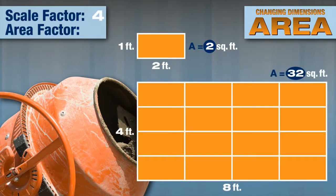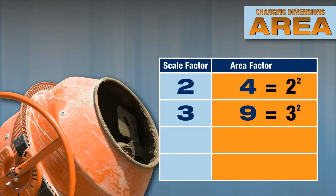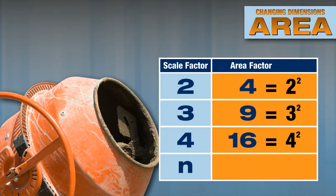If you quadruple both linear dimensions, the area is 16 times the original. Let's put this information into a table and look for a pattern. When the scale factor is two, the area factor is four, or two squared. When the scale factor is three, the area factor is nine, or three squared. When the scale factor is four, the area factor is 16, or four squared. As each of the two dimensions of a rectangle is multiplied by the same number, the area is multiplied by the square of that number.